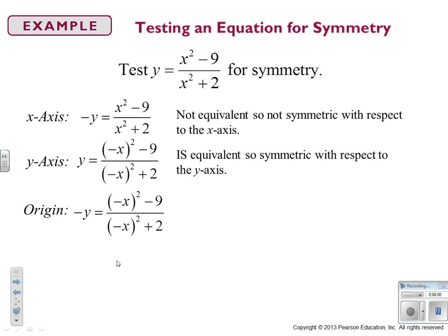For symmetric with respect to the origin, we apply both of those negatives to our x and our y. And we say no because this negative y gets stuck being negative. So now I've got an extra negative running around that I didn't want to have.